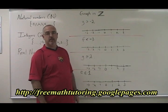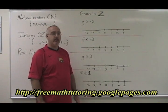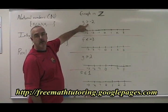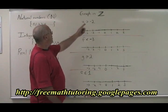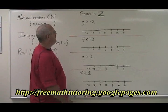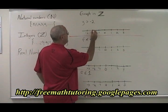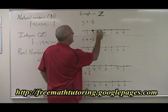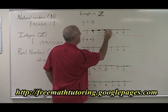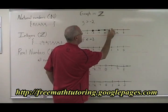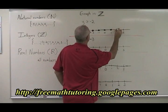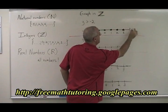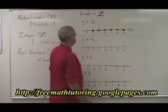Let's try a few more examples of graphing in integers. These ones have the or equal to sign in the symbol. Y greater than or equal to negative 2. Negative 2 is equal to negative 2, and negative 1, 0, and all of the positive numbers are greater than negative 2, so they are included in the answer going on forever in the positive direction.